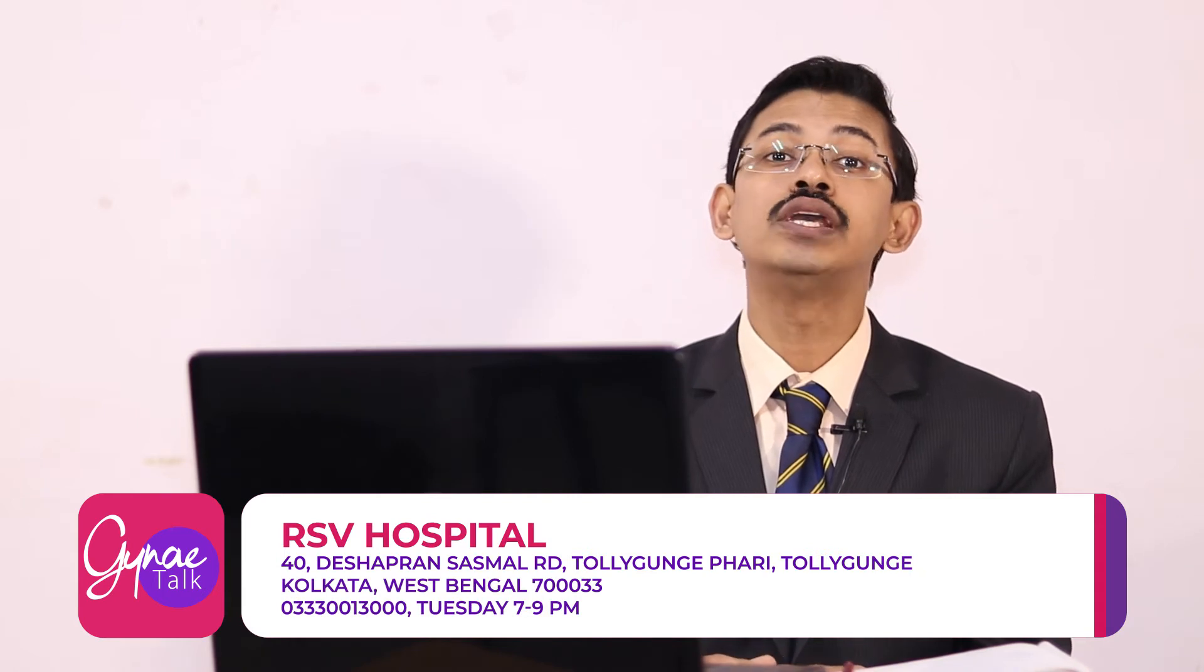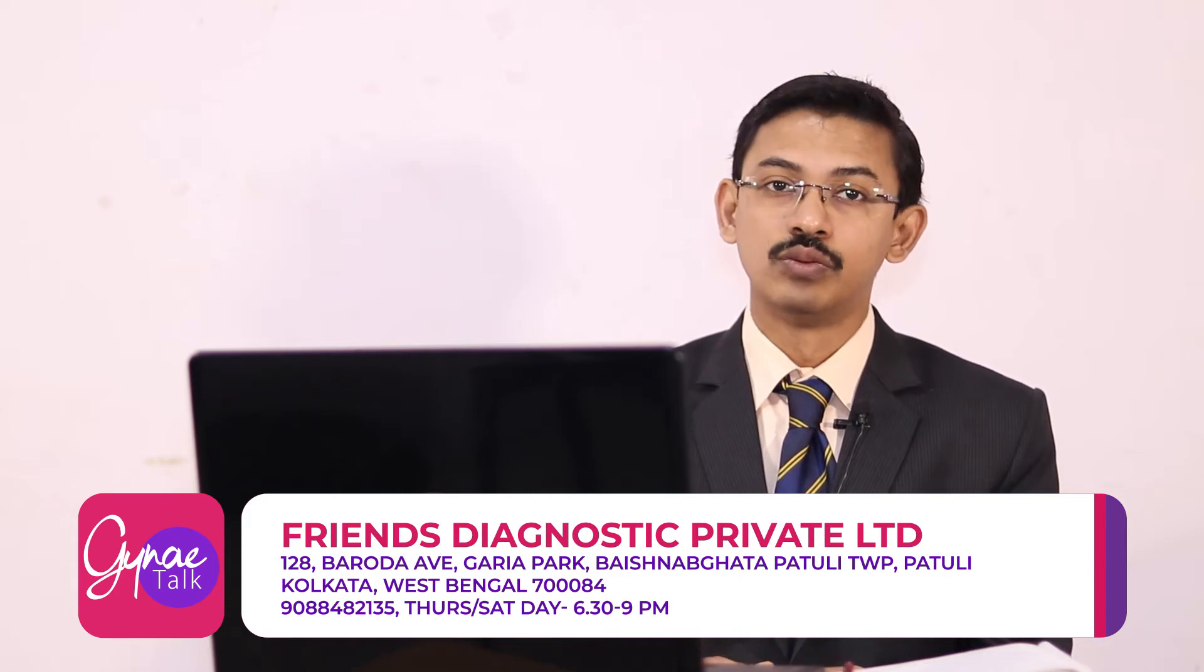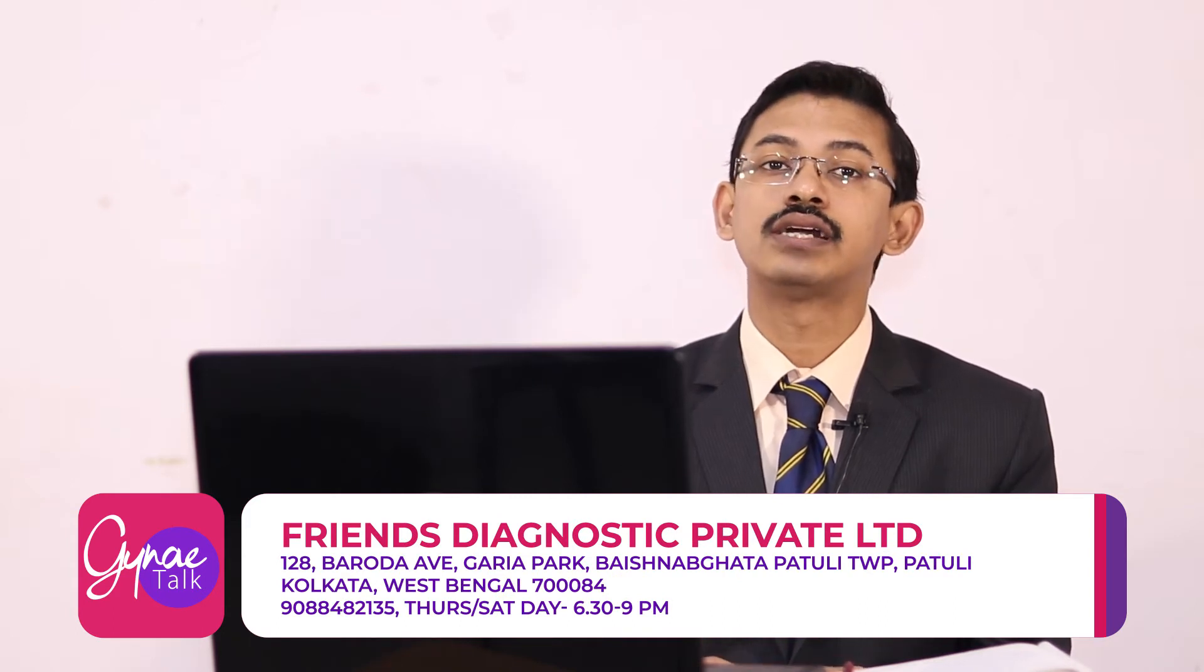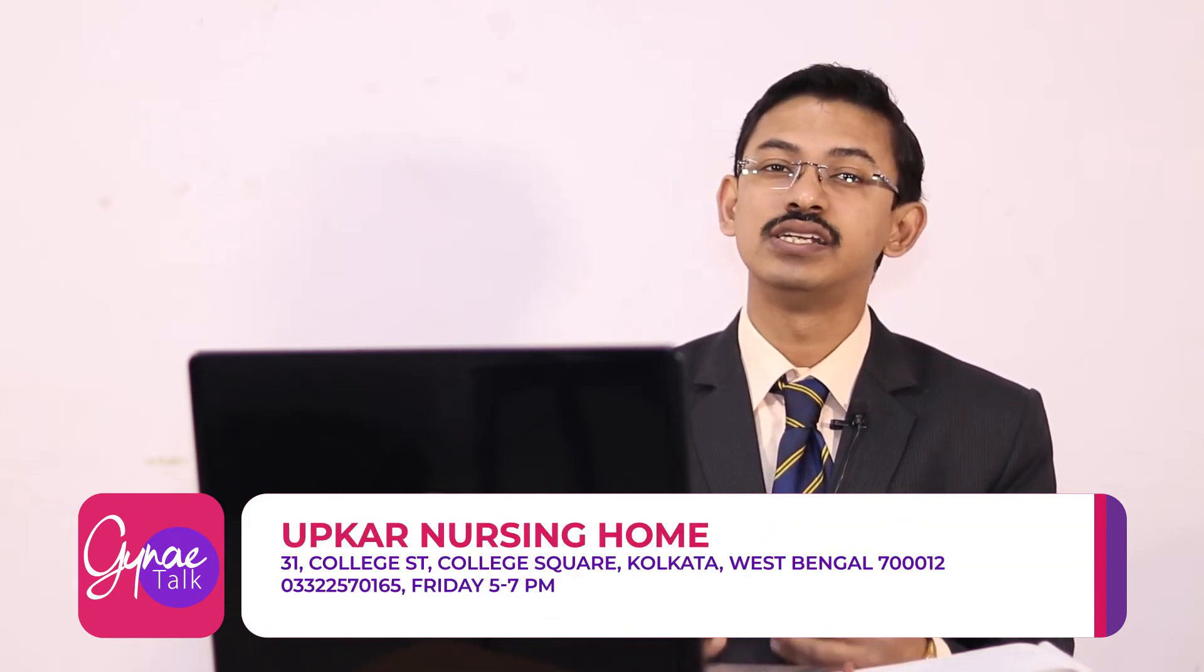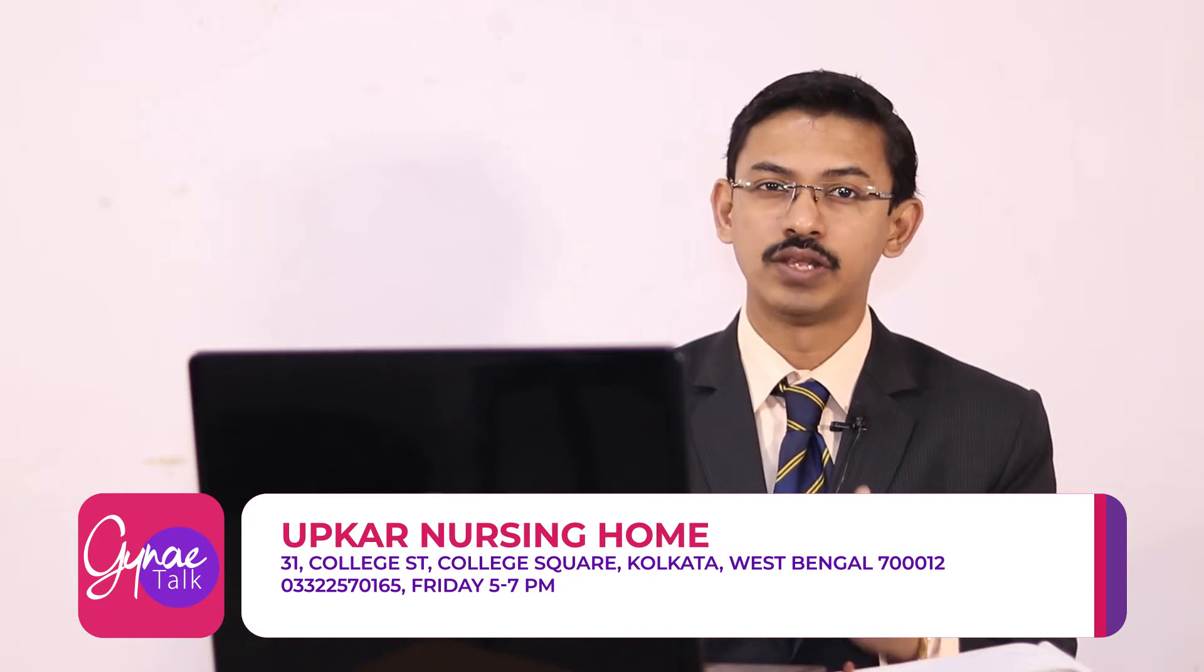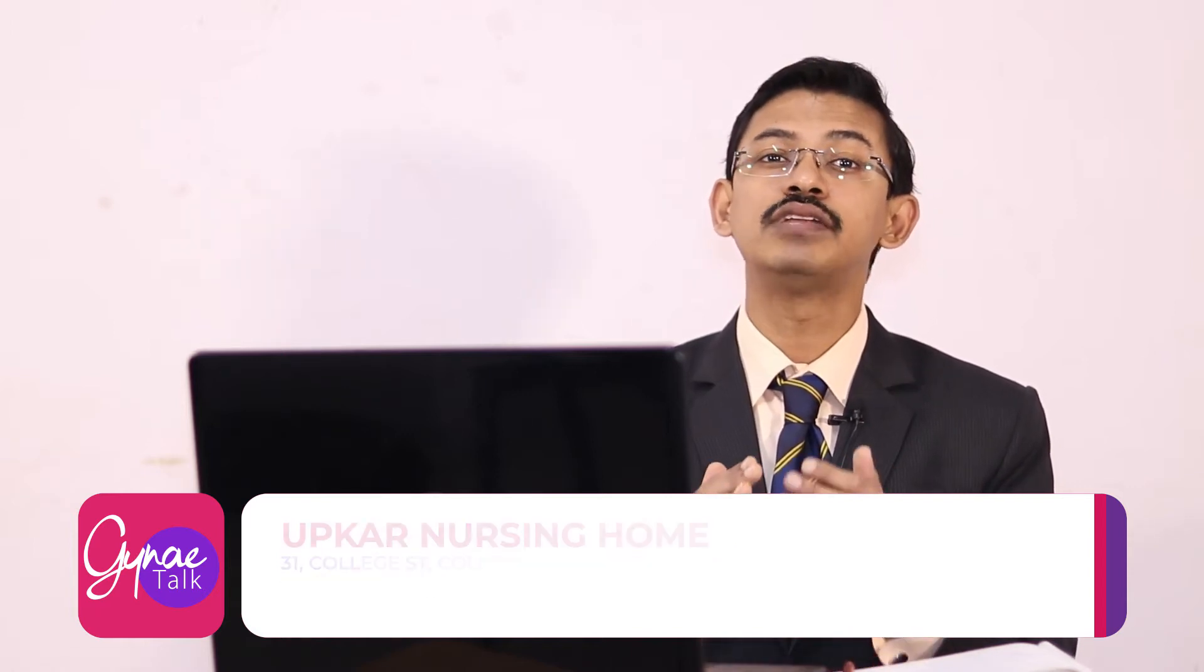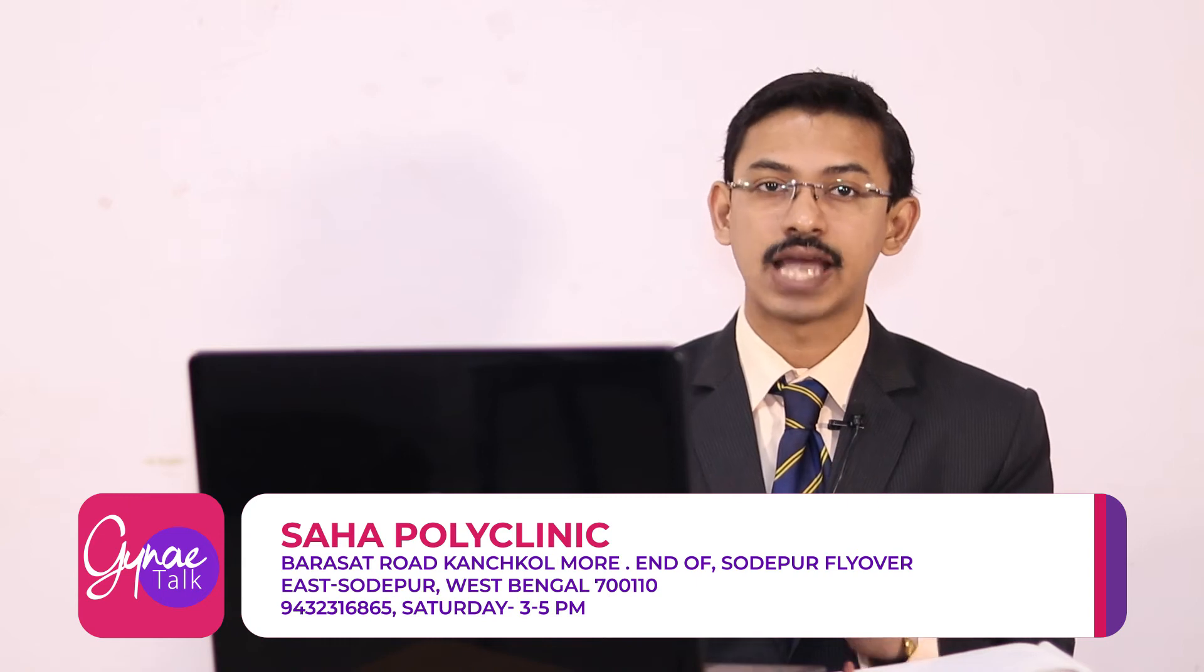Now how do we give the medicine? Usually we give the medicine orally like letrozole or clomiphene. These types of medicine we start from day 2, day 3, day 4 or maximum day 5 of the period and we give the medicine for 5 days, usually 5 days at a stretch.